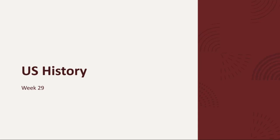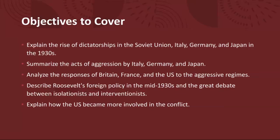We'll begin by explaining the rise of dictatorships in the Soviet Union, Italy, Germany, and Japan in the 1930s. In the aftermath of World War I and the Great Depression, political instability and economic turmoil provided fertile ground for the emergence of authoritarian leaders. In the Soviet Union, Joseph Stalin consolidated power through ruthless repression and industrialization.